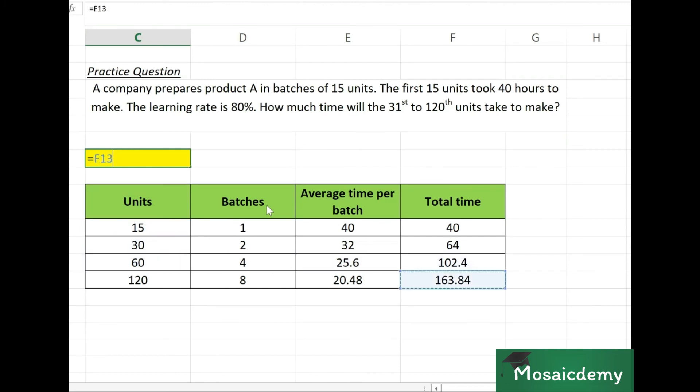So the incremental time, total time for 120 units minus the total time for 30 units, will give us the time from the 31st to 120th units, and that is 99.84 in this case.